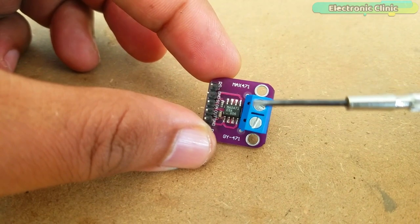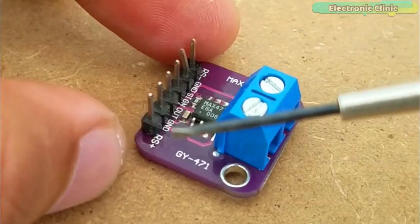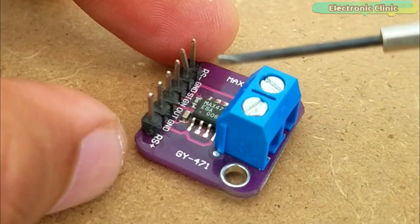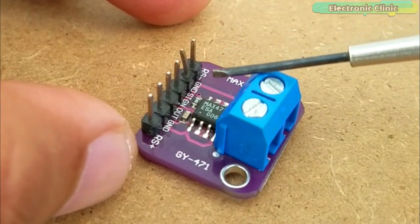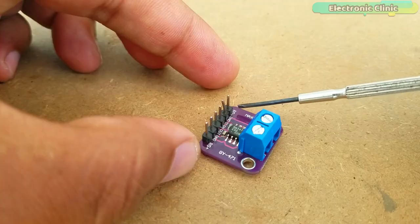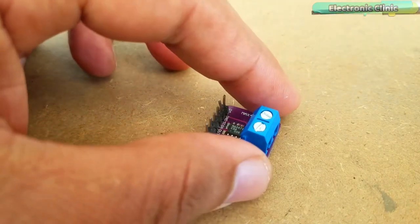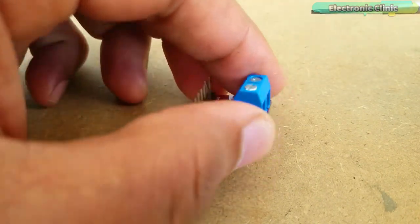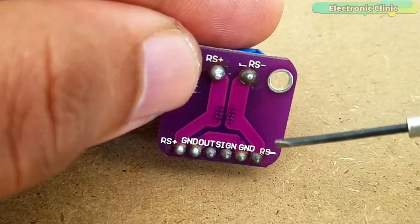As you can see the MAX471 breakout port has a total of six headers which are clearly labeled as number one, RS- pin which is the negative side of the sensing resistor. Number two, ground pin. Number three, sign pin.